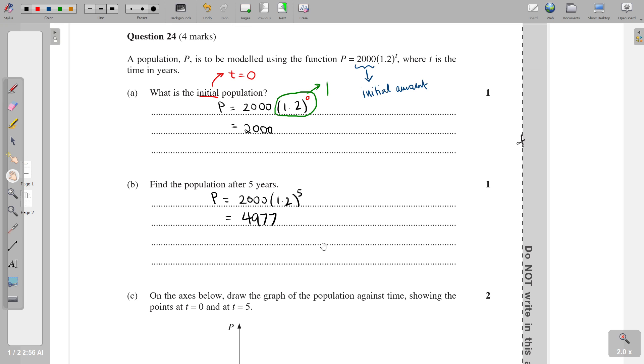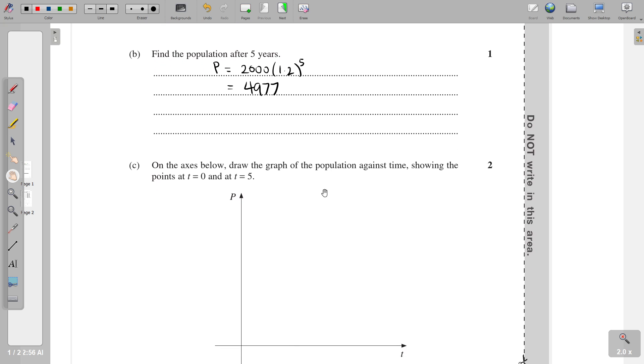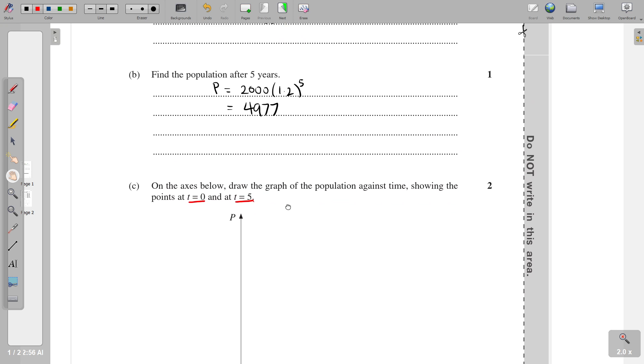And the last one here just gets us to draw a graph of this. And as you can see, there's no grids, there's no real scale given. And what that tells you is that we are only interested in you knowing the shape of the graph, and it's not really about the detailed points. So we only need two points: t equals zero and t equals five. Now, we know that at zero, the population is meant to be 2000.